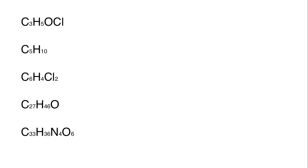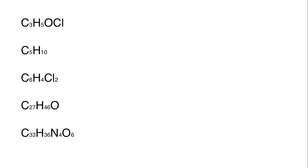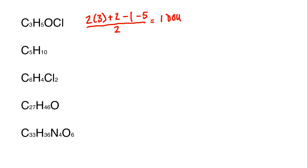Here are some examples. We're going to run through these and determine the degrees of unsaturation by executing the formula. The first one: two times the number of carbons — 2 × 3 — plus two, no nitrogens, oxygens ignored, minus one halide, minus five actual hydrogens, divided by two. That's 6 + 2 - 1 - 5 = 2, divided by 2 equals one degree of unsaturation. That's about how long it should take — roughly 30 seconds.